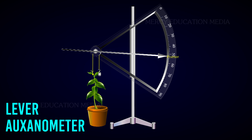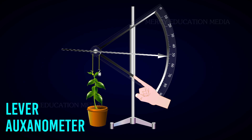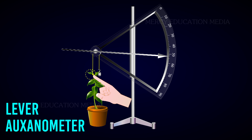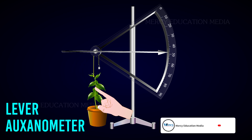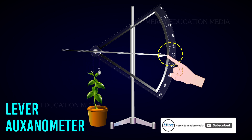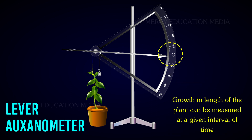The auxanometer consists of a movable pointer attached to a pulley, and a graduated arc fixed to a stand. A thread passes around the pulley. One end of the thread is tied to the growing tip of the potted plant, and the other end is tied to a small weight. As the plant grows in length, the pulley rotates and the needle attached to the pulley moves down the scale, allowing the growth in length to be measured at a given interval of time.